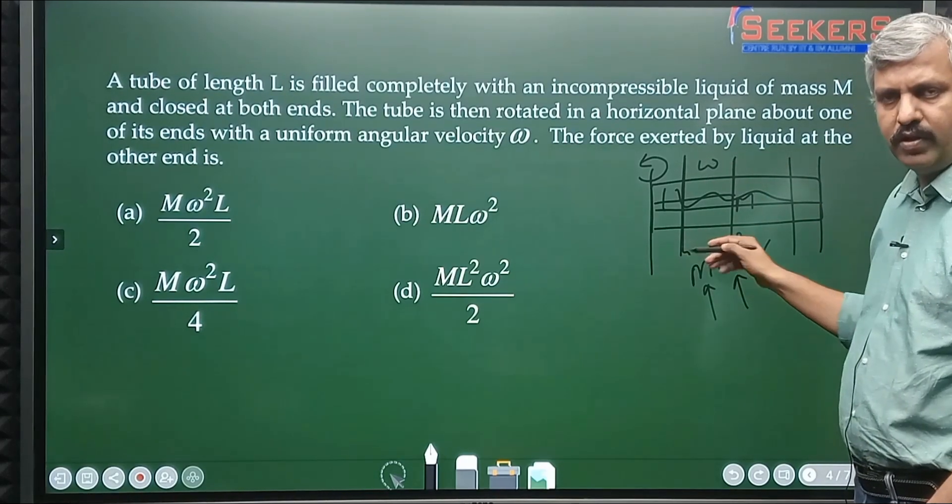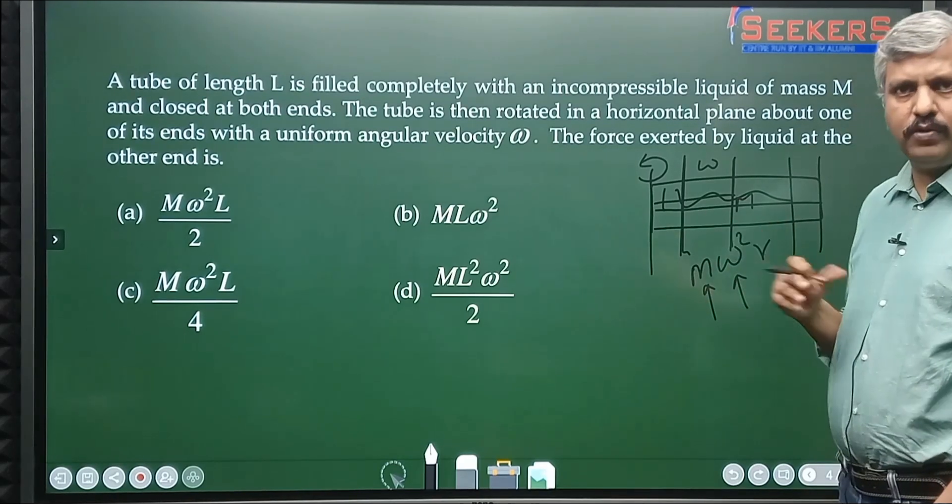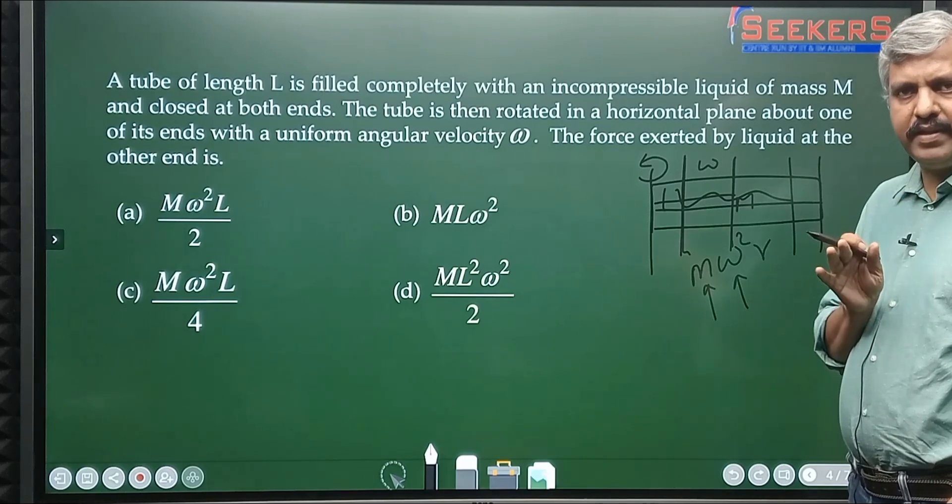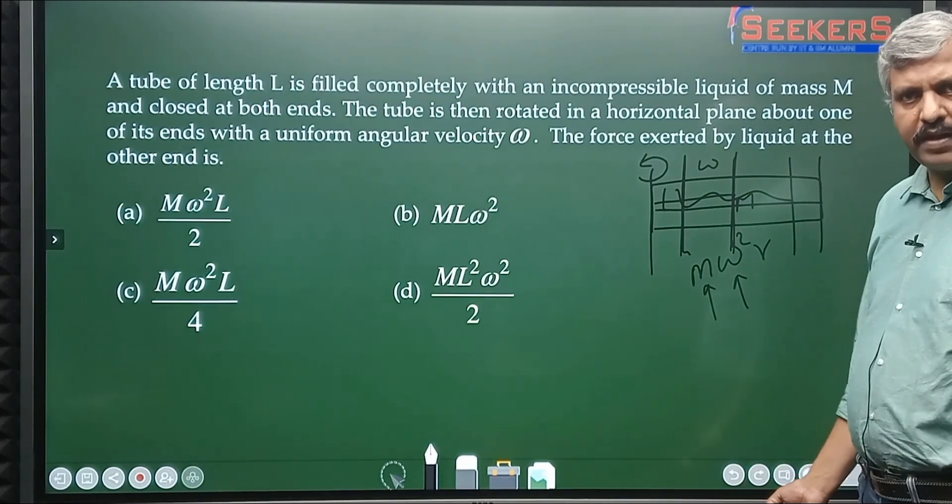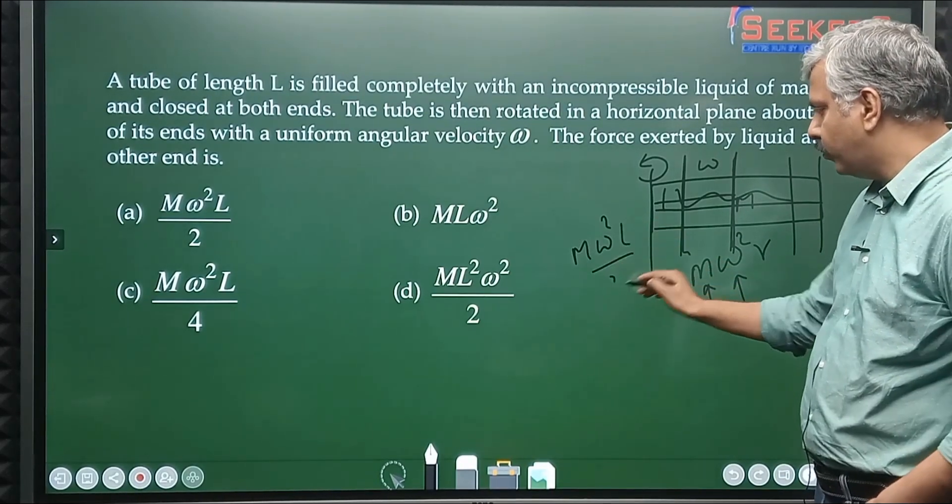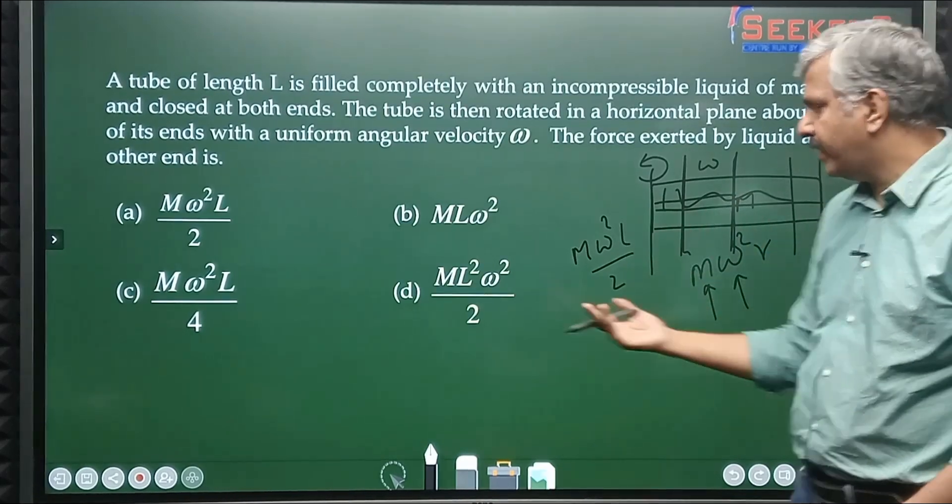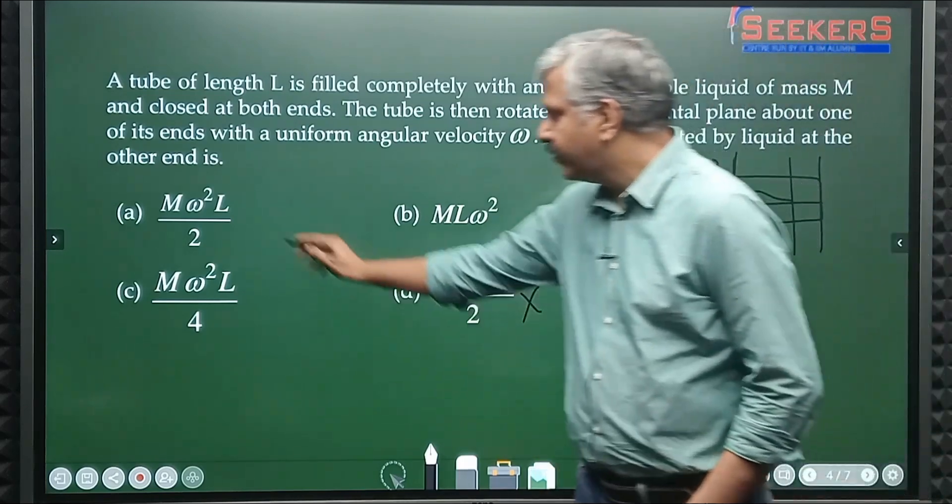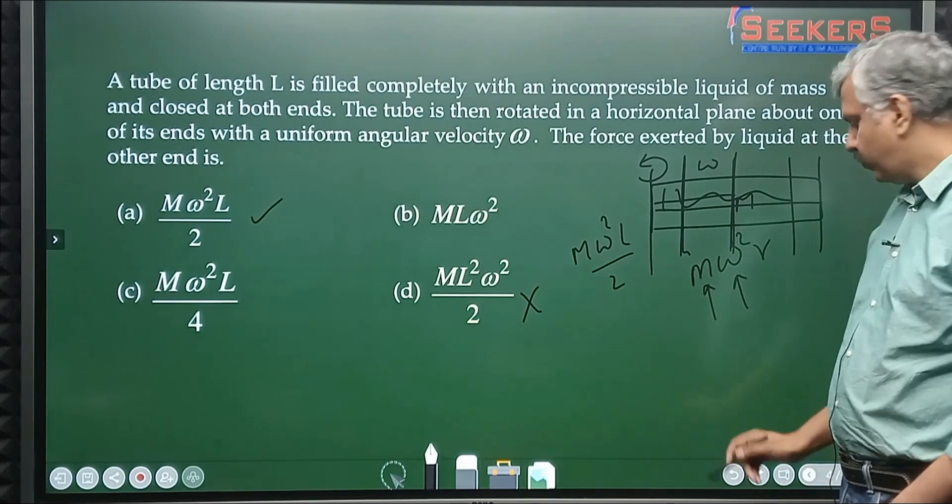Common sense will tell you that you can't take the full length because there is liquid on this side also, you can't take it on this side also. In your exam, all such cases typically you have to do some kind of integration, but in your exam you may assume the mass to be located in the center. So if the mass is located in the center, my answer will simply be m ω² L/2. I do not have to work out anything. Just by looking at the question I can say this is wrong because dimensionally it would not be correct, so this is the only correct option.